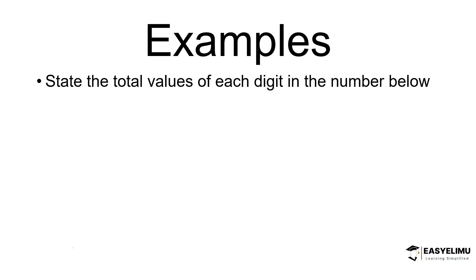Let's look at a few examples to help us understand how you arrive at the total values of digits within a given number. Here is the first question: state the total values of each digit in the number below. The number is 239,176.058 — two hundred and thirty-nine thousand, one hundred and seventy-six point zero five eight. We want to see how you state the total values of the respective digits: 2, 3, 9, 1, 7, 6, 0, 5, and 8.